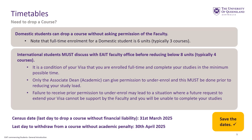If you need to drop a course, domestic students can drop a course without asking permission of the faculty. It's important to note that for a domestic student, six units or three courses is considered full-time enrollment. International students must discuss with the faculty office before reducing their study load below eight units or typically four courses — it is a condition of your visa that you are enrolled full-time.